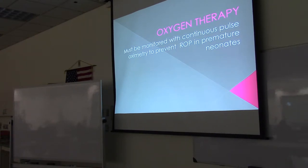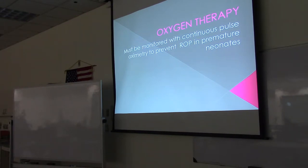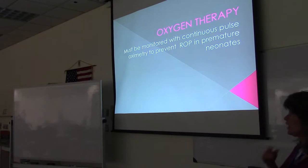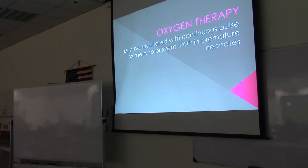If we have a neonate that is hypoxemic and we need to add supplemental oxygen, what are our choices? With neonates — especially those born prematurely — you always have to measure oxygen saturation. If saturation is high enough, it could mean the PaO2 is high in arterial blood, and a high PaO2 can affect vascularization of the eyes, leading to retinal detachment and blindness. So always monitor with a pulse oximeter.